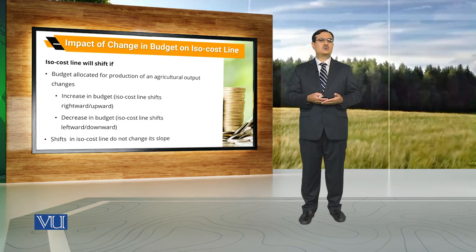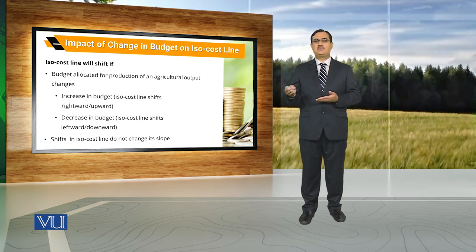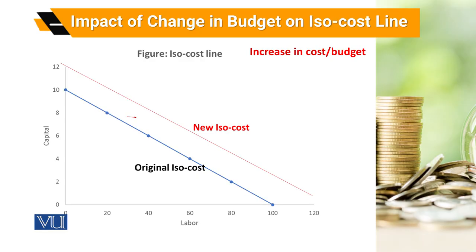یہ جو shift ہے ISO cost line کی — from one position to another position — this is because of change in the amount allocated for the purchase of these two inputs by the farmer. Now to elaborate: agriculture output is a function of labor and capital، اور ان inputs کو purchase کرنے کے لیے farmer has to bear certain costs and use certain resources۔